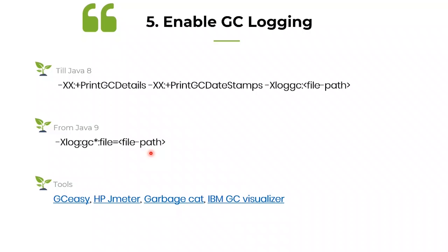People ask whether GC logging adds overhead. GC logging does not add any noticeable overhead — if anything, it is very very negligible and would not even be measurable. Compare that to the overhead APM tools add by putting an agent inside the JVM. Some free tools to analyze GC logs include GCeasy, HPJmeter, GarbageCat, and IBM GC Visualizer.